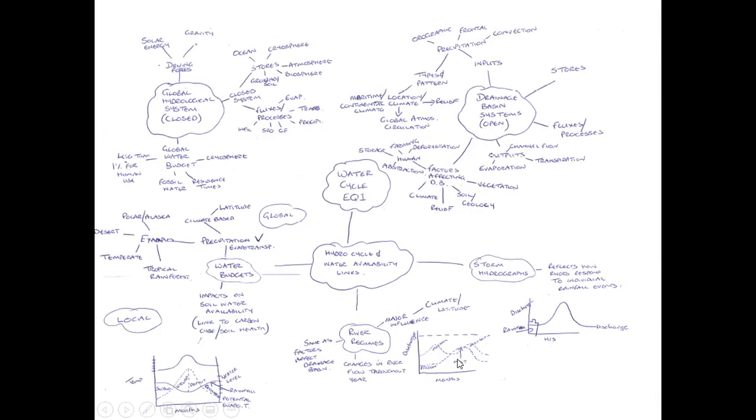So there we have a very quick overview of water cycle inquiry question one. And you can start to see how it links from a global to more local systems, looking at the role of the different factors affecting the drainage basin, the processes, the inputs and the stores, looking at how water budgets are affected by climate and latitude, and looking at how individual river flows change throughout the year and can change on a smaller scale as well.